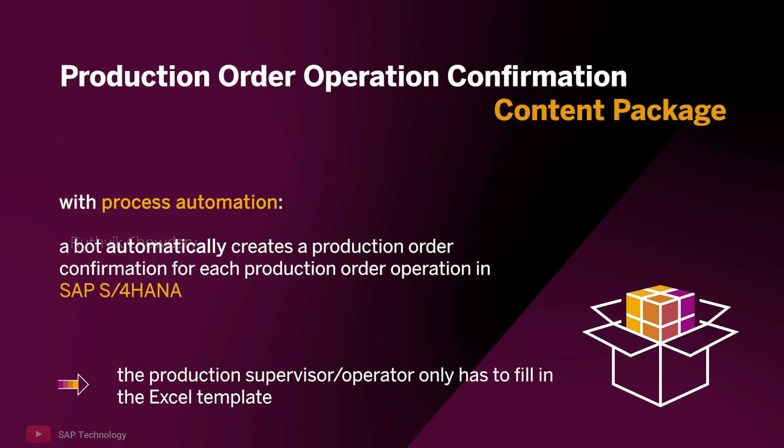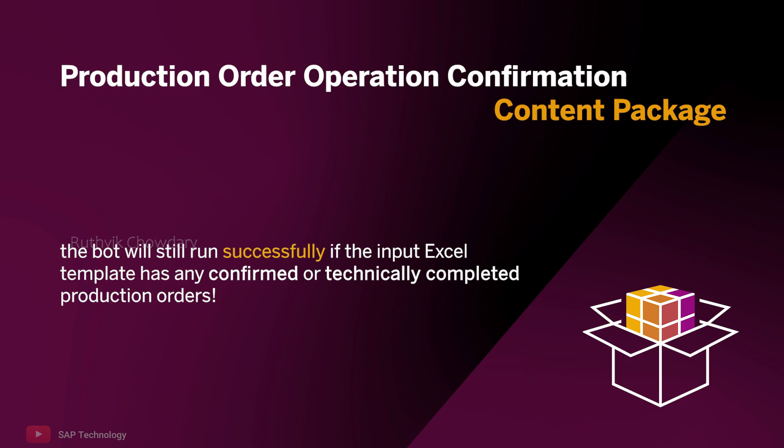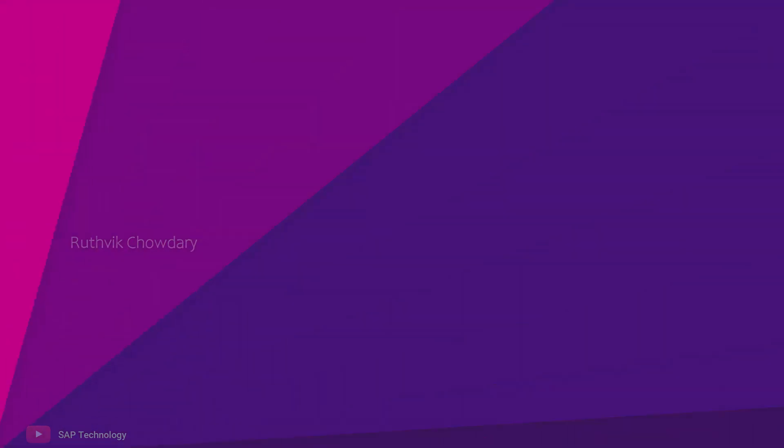With the bot running, the production supervisor can generate the documents by simply entering the relevant data into an Excel template and the bot takes care of the rest. Even if the input Excel template has any confirmed or technically completed production orders, the bot will still run successfully and confirm those production orders again.